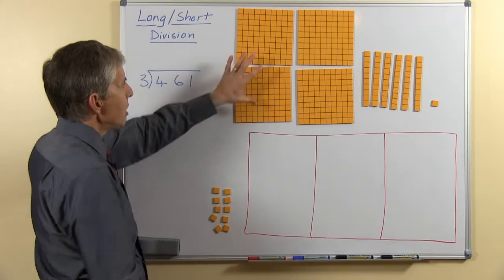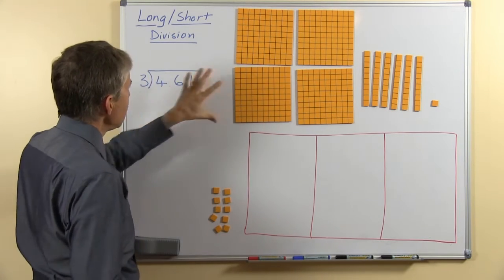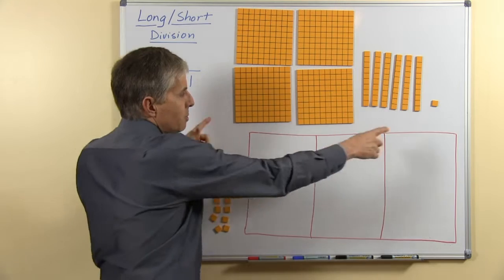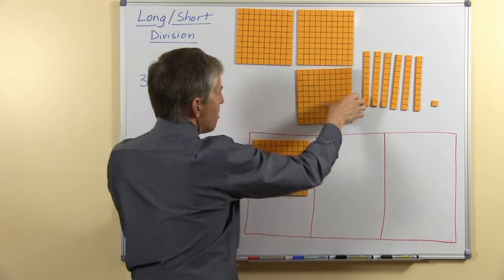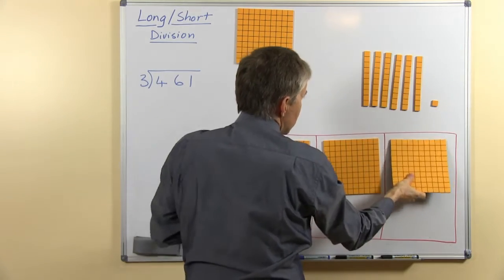So let's have a look at the question, we have four hundreds here and here and we're going to share them among 3, this is the space where we have the 3. Of course we can share some of the hundreds, we can share 3 of them straight away.